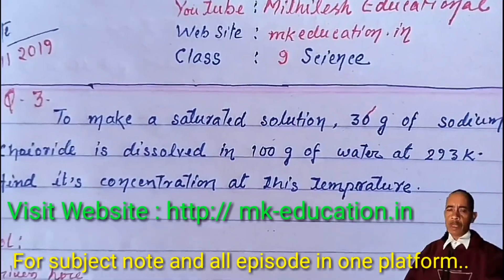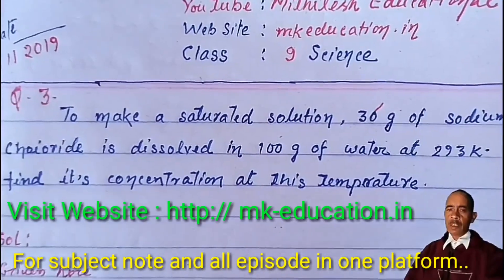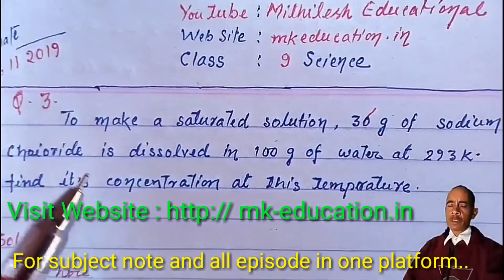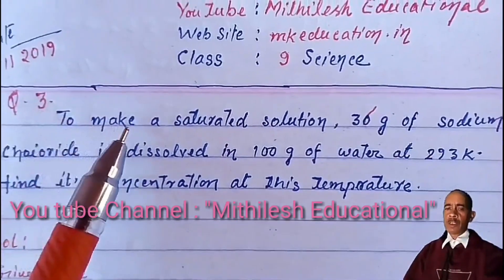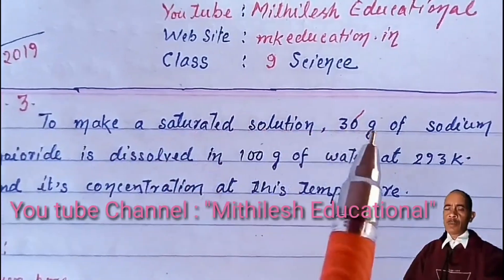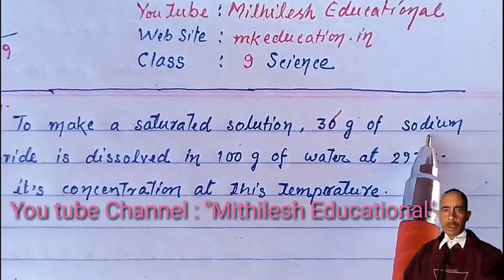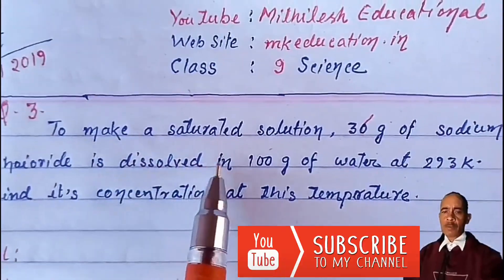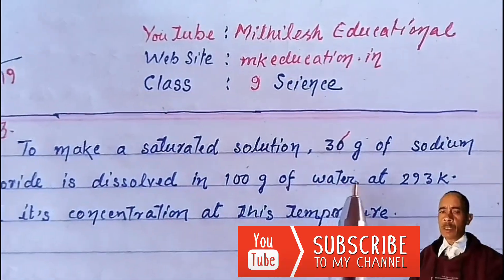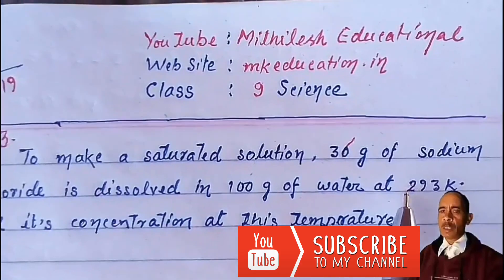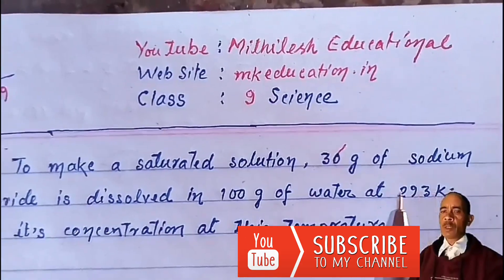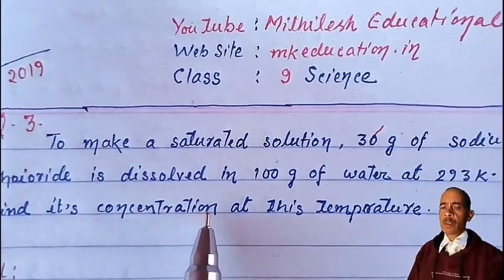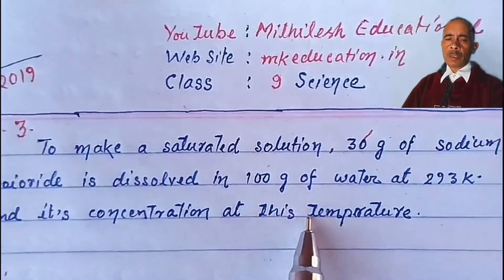Good morning, dear students. Today, class 9, subject class, question number 3. To make a saturated solution, 36 gram of sodium chloride is dissolved in 100 gram of water at 293 Kelvin. Find its concentration at this temperature.